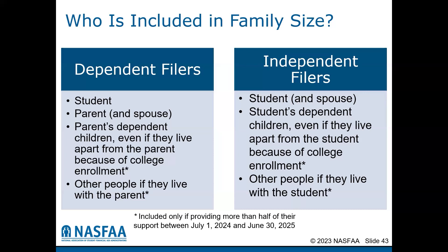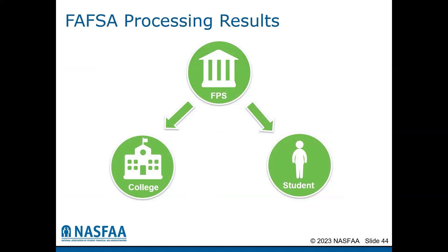Previously, an unborn child was allowed to be considered in the family size based on the expected due date. After the contributors and the student have completed all of their information, provided consent for their tax information to be transferred, and signed and submitted the FAFSA, that FAFSA information gets sent to a federal processing system. The federal processing system sends the results to the student and the schools listed on the FAFSA form. These results include the student's SAI, messages related to conflicting information, and the student's eligibility for federal financial aid funds.